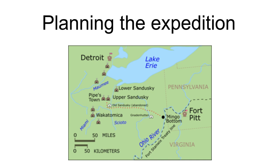Irvine wrote detailed instructions for the yet-to-be-chosen commander of the volunteers: 'The object of your command is to destroy with fire and sword, if practicable, the Indian town and settlement at Sandusky, by which we hope to give ease and safety to the inhabitants of this country. But if impracticable, then you will doubtless perform such other services in your power as will, in their consequences, have a tendency to answer this great end.'